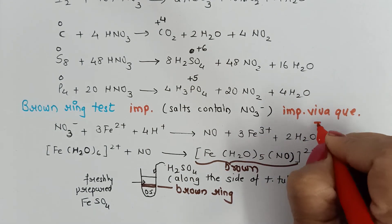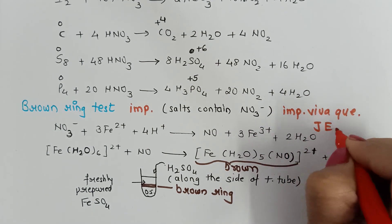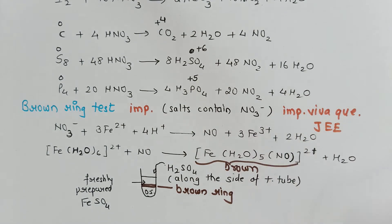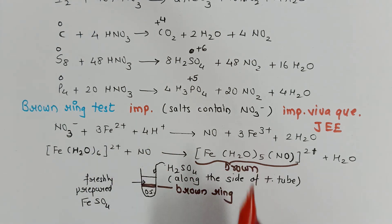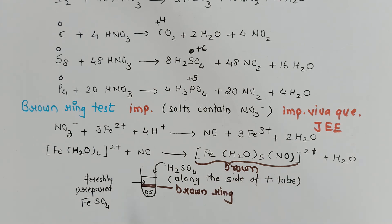You must perform this brown ring test in the lab during the confirmatory test of nitrate ions. It is also an important viva question and is asked in JEE: 'Write the formula of the complex formed during the brown ring test.' In the brown ring test, Fe2⁺ gets oxidized to Fe3⁺ and a brown colored ring is formed.